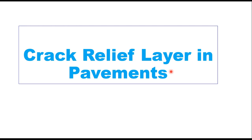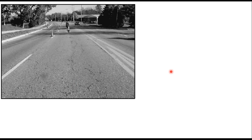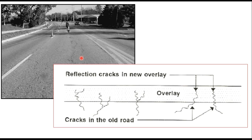Today we will discuss crack relief layers as provided in flexible pavements or rigid pavements. Crack is a major problem that occurs on the pavement. When a pavement surface cracks and loses its strength, an overlay is provided as a strengthening measure. If the cracks in the lower layers are not sealed properly before putting the overlay, these cracks will start reflecting on the overlay surface.